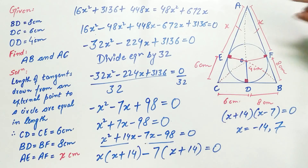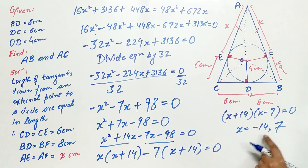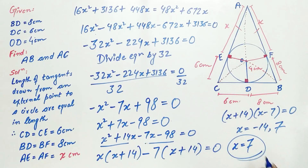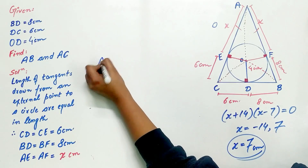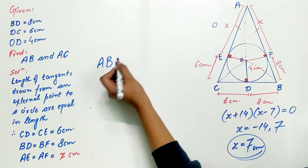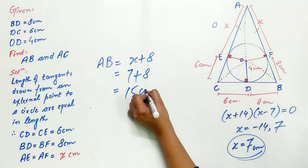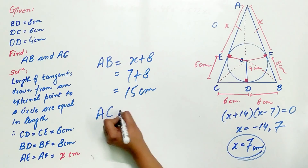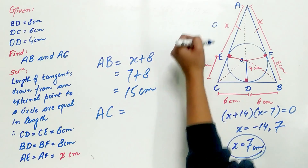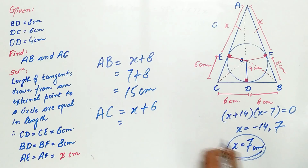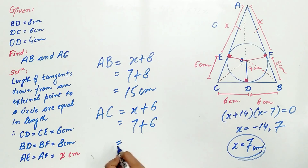Since x is a length, it cannot be negative. Therefore we discard x = −14, and x = 7 cm. Hence AB = x+8 = 7+8 = 15 cm, and AC = x+6 = 7+6 = 13 cm.